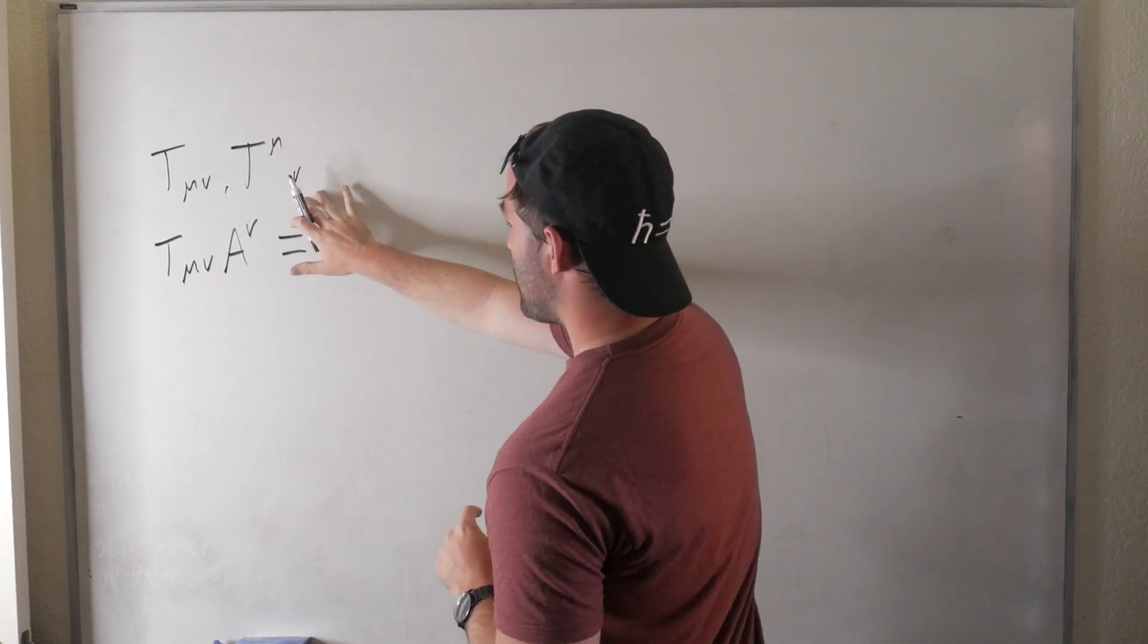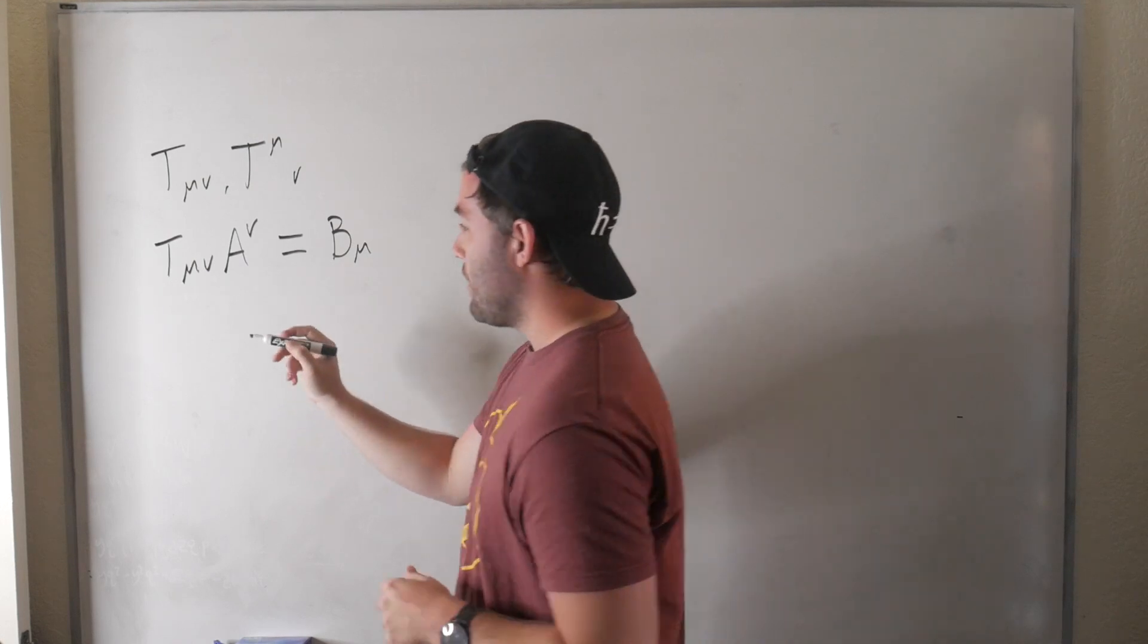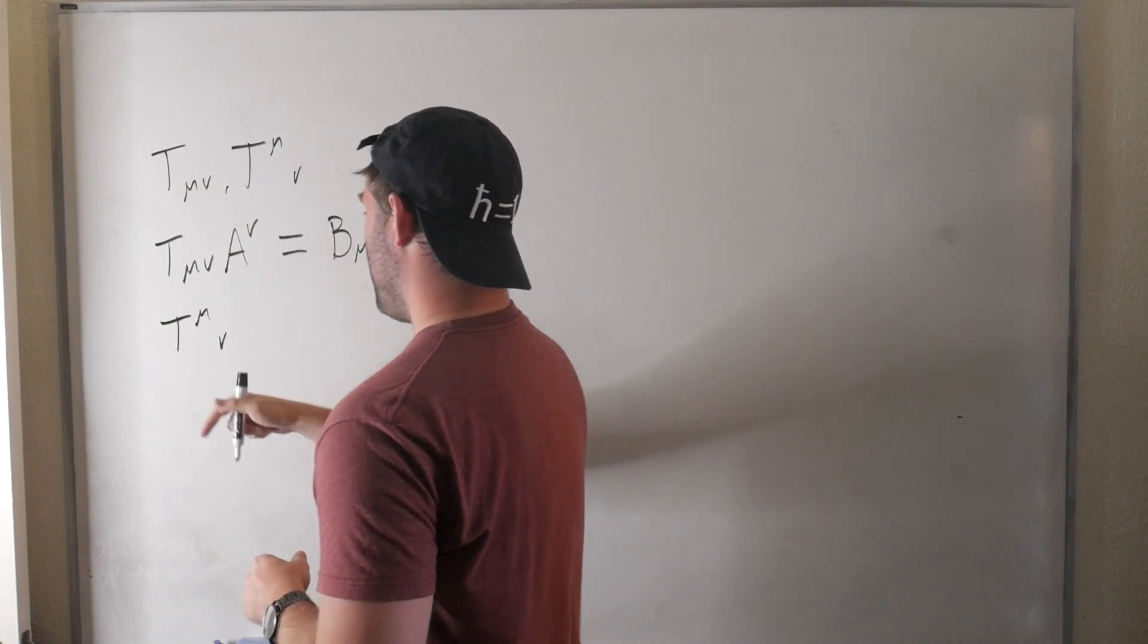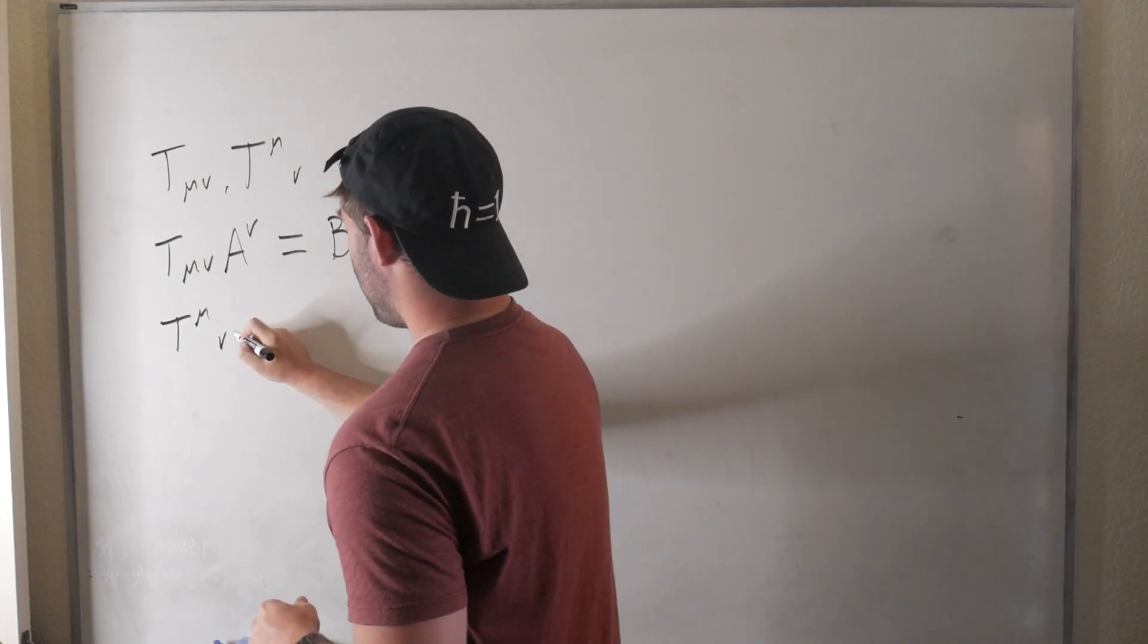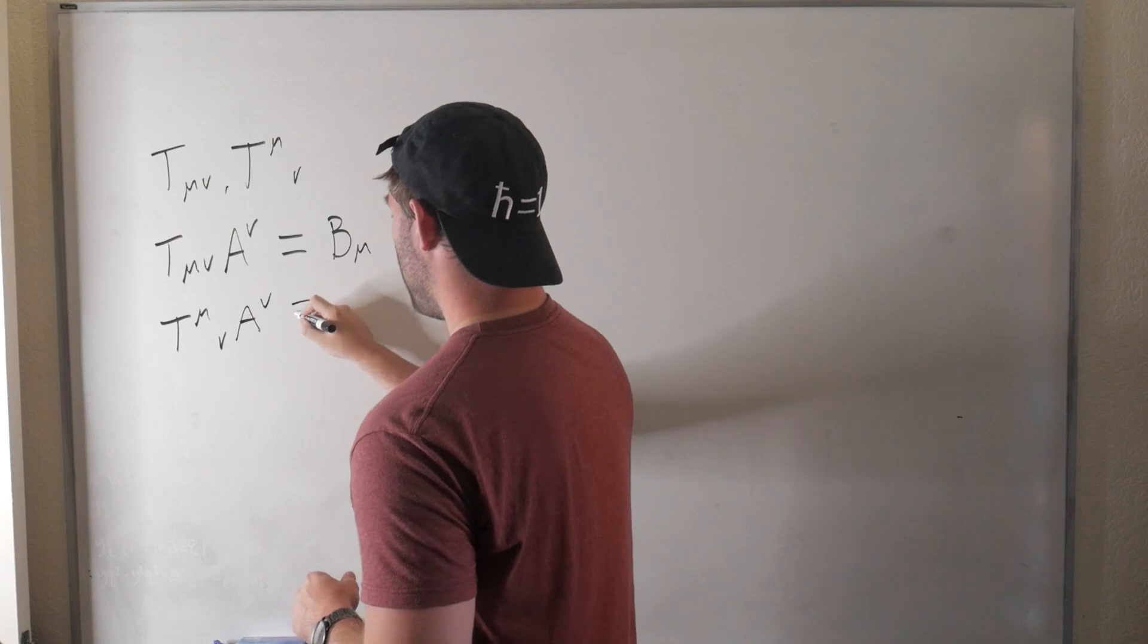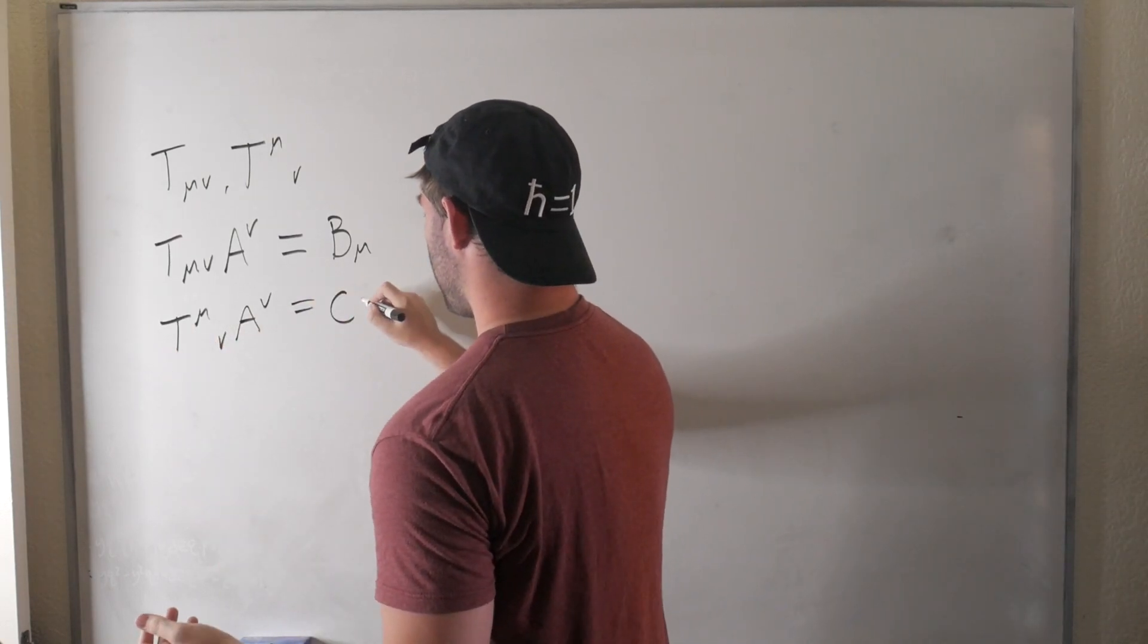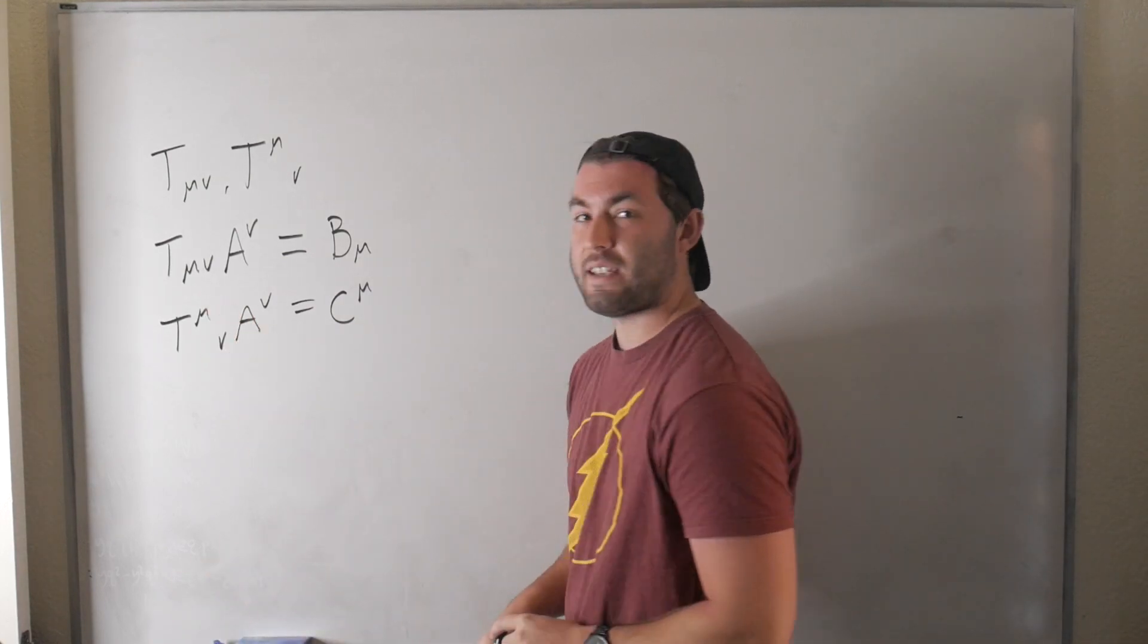Now if we take a look at the mixed tensor, this is where things get a bit interesting and a bit more physical, because if we were to do the same thing where we have a T^μ_ν, these are μ's, please don't make fun of them, I'm very self-conscious about my μ's, and we contract it with the same vector, A^ν, well now the thing that's left over is upstairs, so let's call that a different vector, C^μ.